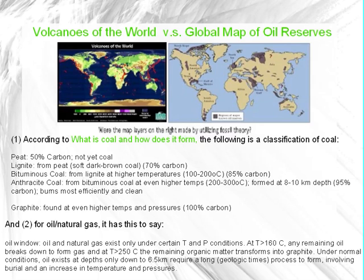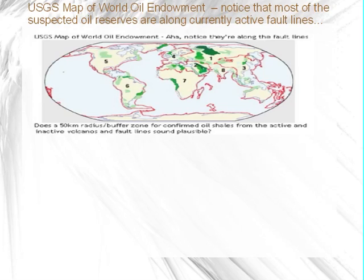For oil and natural gas, the oil window indicates that oil and natural gas exist only under certain temperature and pressure conditions. At T=160°C, any remaining oil breaks down to form gas, and at T=250°C the remaining organic matter transforms into graphite. Under normal conditions, oil exists at depths only down to 6.5 km, requiring a long geologic time process involving burial and an increase in temperature and pressure.